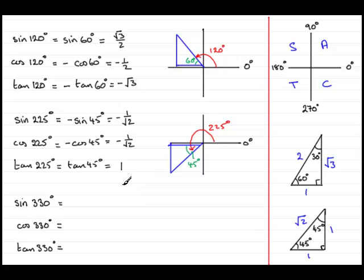You might like to pause the video now and have a go at this one and come back when you're ready. Let's just see how we get on with this one. Again, draw your quadrant diagram and put your 0 degrees there.